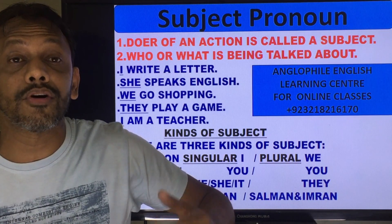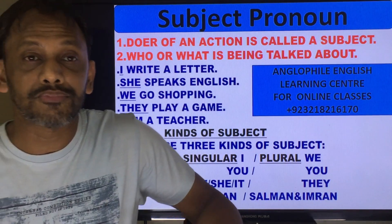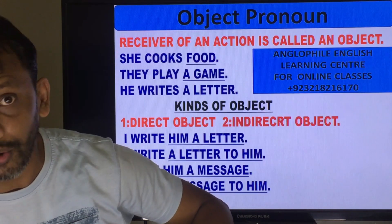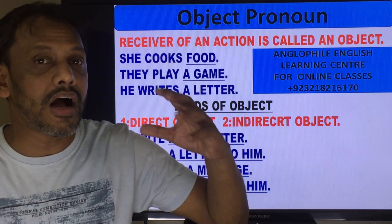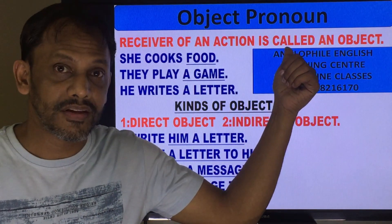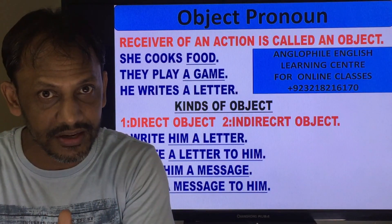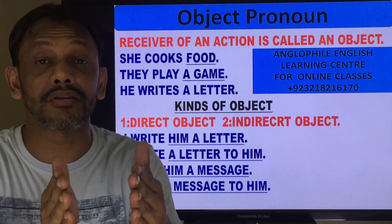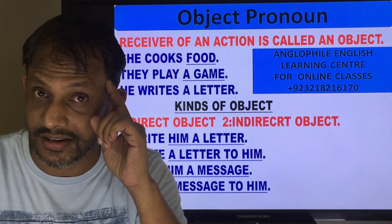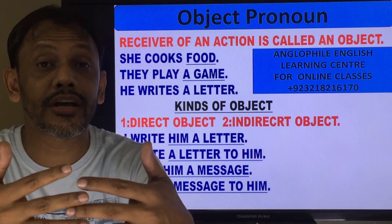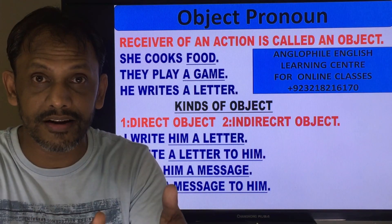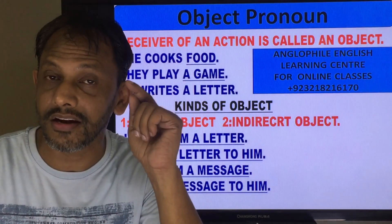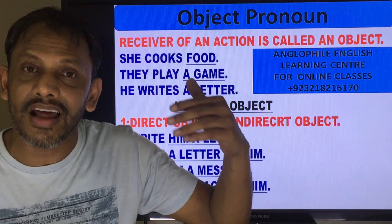Today what we are learning is about object pronoun. The receiver of an action — which receives the work — is called an object. In one sentence we have the doer of an action, which is the subject, then we have the verb which shows an action or state, and then after the verb we have the receiver of an action, which is called the object. Verb and object always remain together; you cannot separate them. For example, 'I play cricket' — cricket is part of play. So the receiver of an action is called an object.